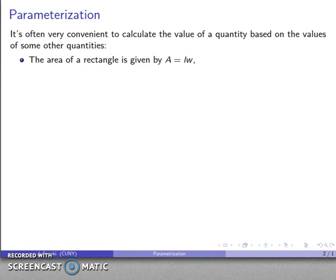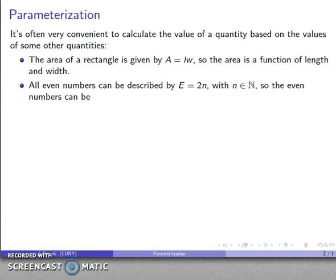For example, we might talk about the area of a rectangle, and that's going to be given by the area equals length times width. So we might say that the area is based on, well mathematically we say it's a function of the length and width. And also we might say that I can talk about all even numbers. I can describe an even number as E equals 2 times N, where N is in the set of natural numbers. So the even numbers can be parameterized by N. And the idea is that this concept of parameterization, we can think about it as a function, we can think about it as a formula that gives us the different values.